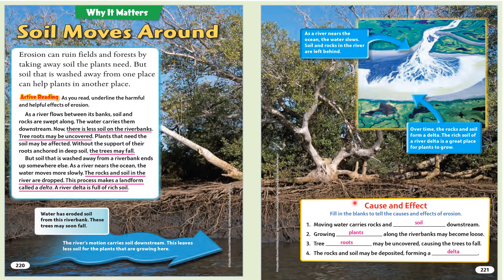Cause and effect. Fill in the blanks to tell the causes and effects of erosion. 1. Moving water carries rocks and [blank] downstream. 2. Growing [blank] along the riverbanks may become loose. 3. Tree [blank] may be uncovered, causing the trees to fall. 4. The rocks and soil may be deposited, forming a [blank].